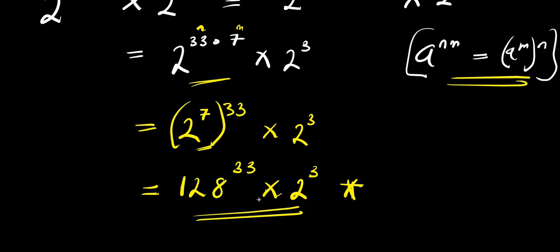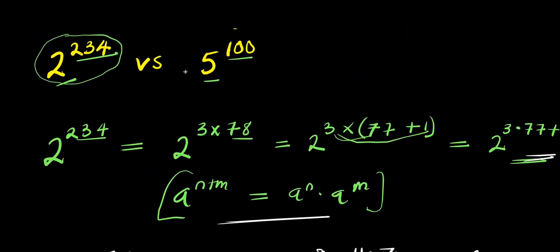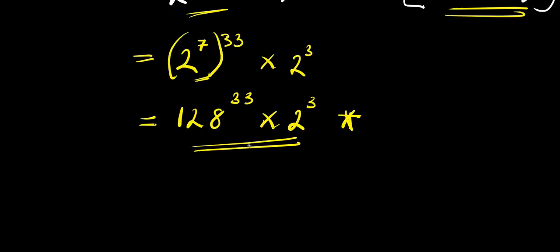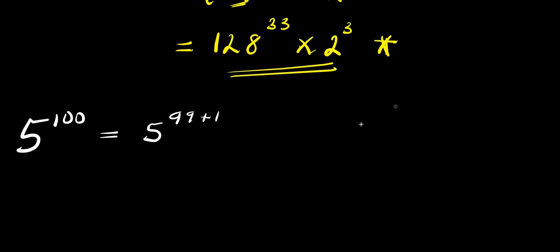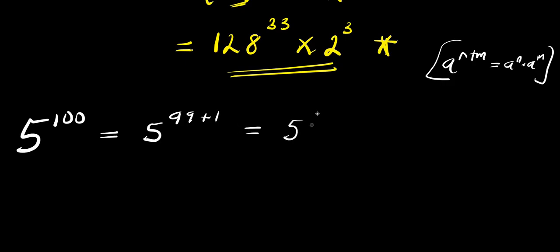Now let's concentrate on the second number, which is 5 to the power of 100. We can express 100 as 99 plus 1, and applying the identity a to the power (n plus m) equals a to the power n times a to the power m, this gives 5 to the power of 99 times 5 to the power of 1, which is just 5. Then we can write 99 as 3 times 33, giving us 5 to the power of (3 times 33) times 5.